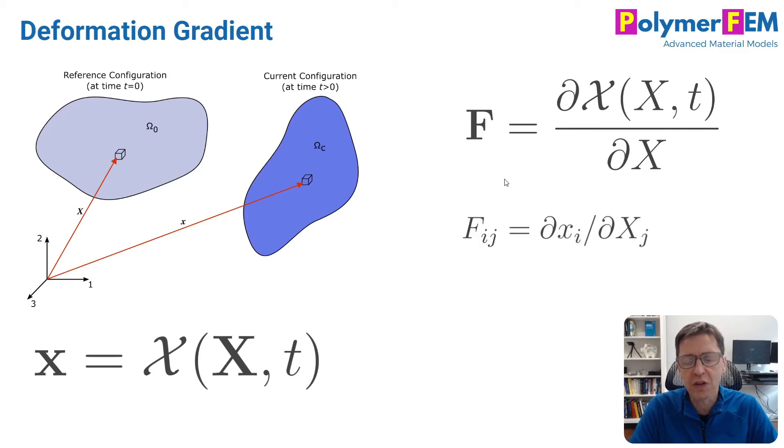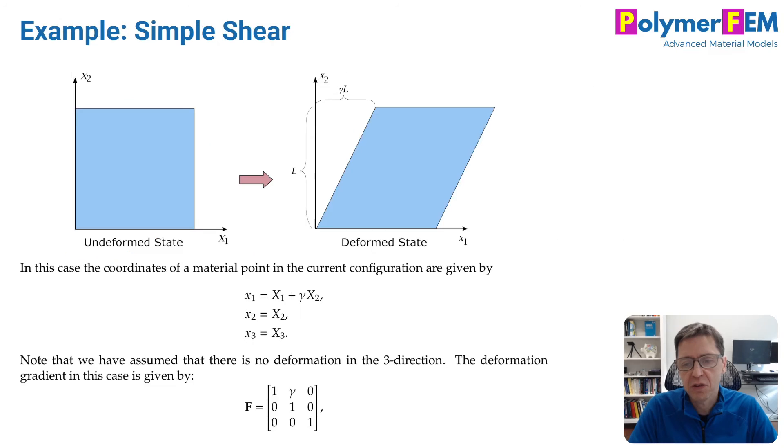This definition looks abstract, but it's easier to understand in component form. The deformation gradient has two components i and j, and it's the partial derivative of the location with respect to the original location: F_ij = ∂x_i/∂X_j. That's really how this is done.